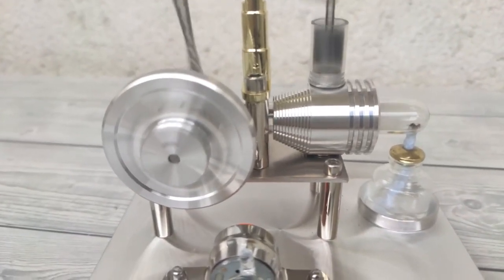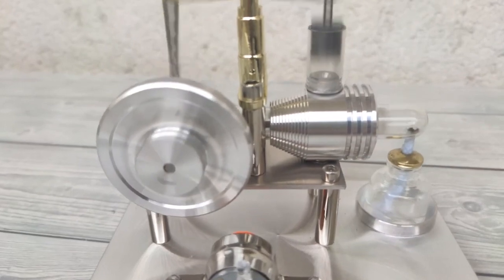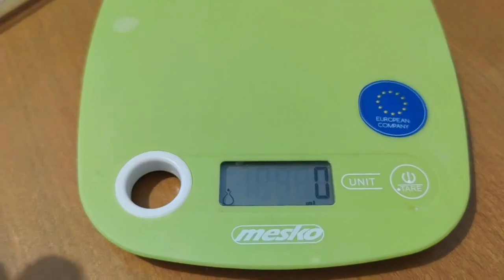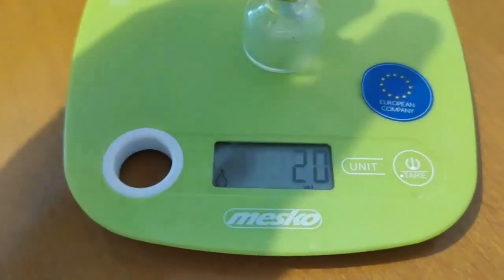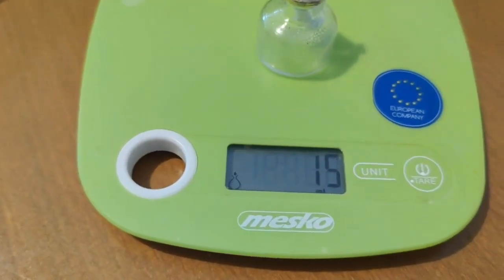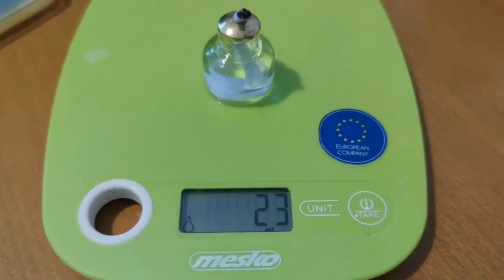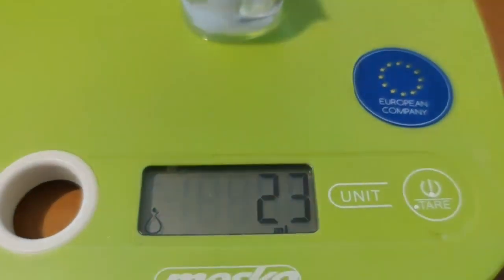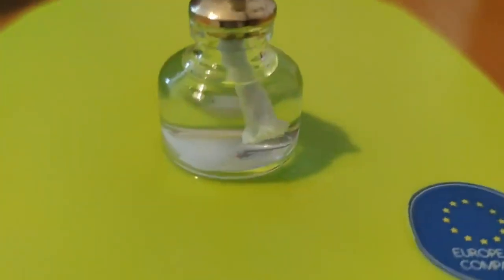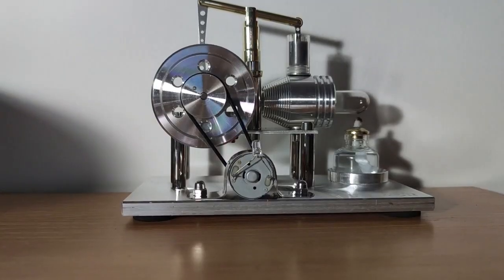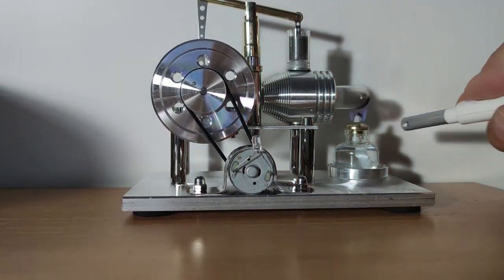And one more test that I conducted was to see how long it could work on a full tank of fuel. But first I checked the capacity of this small bottle so we could see how much fuel it could hold. As you can see it can hold about 8 milliliters of fuel, which I think can last about 15 to 16 minutes in my opinion. But let's run it and see the actual result.